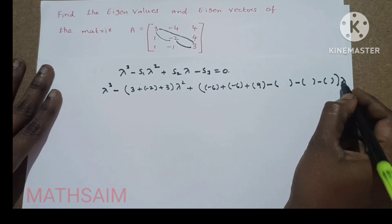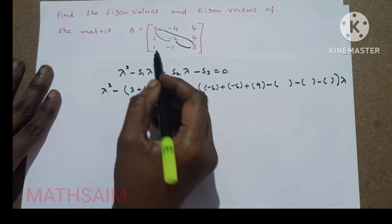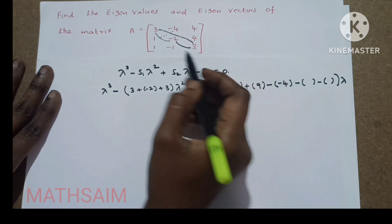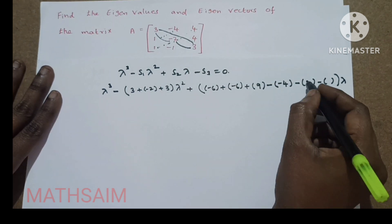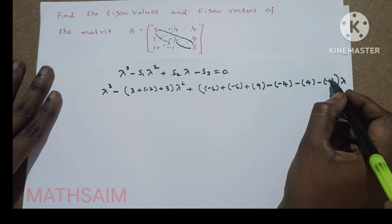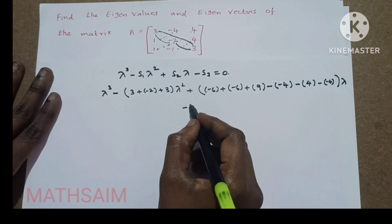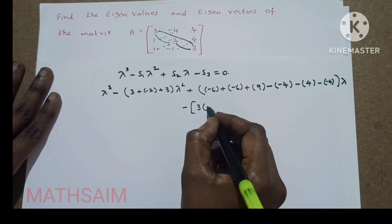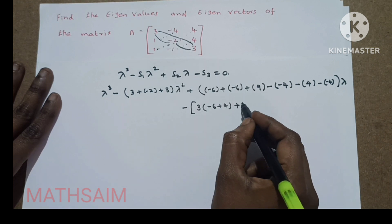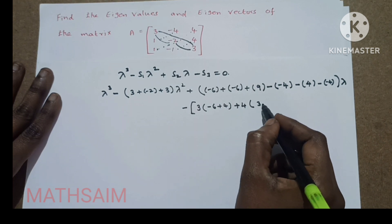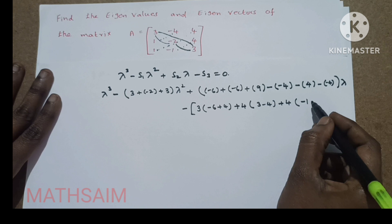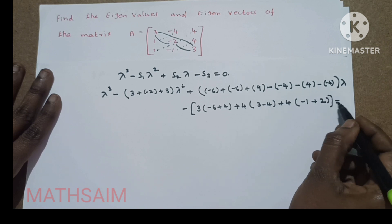For the next three elements, we subtract the products of off-diagonal elements: minus times minus, then minus. So those give us 1 times minus 4 equals minus 4, then 1 times 4 equals 4, and the third element is minus 1 times 4 equals minus 4. S3 is the determinant: 3 times minus 6 plus 4, then minus 4 plus 4, then 1 times minus 1, minus 1 plus 2, equal to 0.